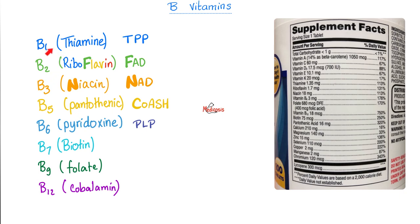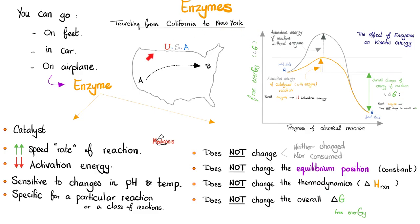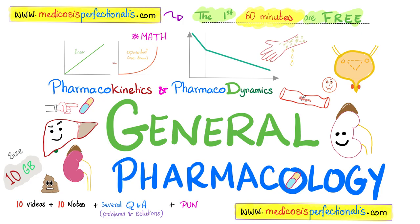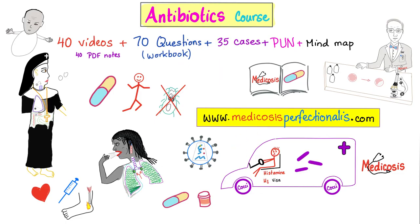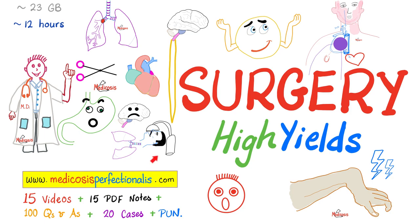But for now, please memorize that vitamin B2 is riboflavin and will give you FAD, but vitamin B3 is niacin, which will give you NAD. Please pause and review. If you want to be an excellent student, bring a blank piece of paper and write everything here down, preferably without looking at my slides. If you want to download my slides, you can download them at medicosisperfectsnetics.com, as well as my general pharmacology course, my antibiotics course, my surgery high-yields course.